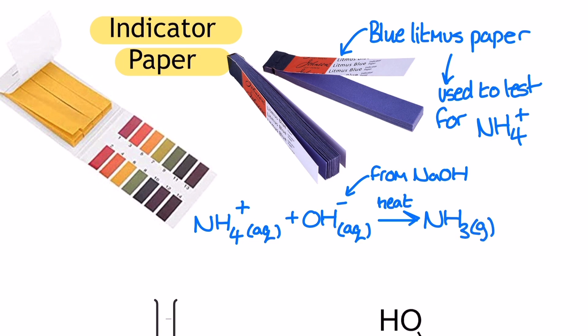We then test the gas produced, if any, with moist blue litmus paper. Now, be careful here, because unlike other ways which we test the pH of something, we're not actually going to place the moist litmus paper in the solution. We're going to hold it over the open end of the test tube, whilst the sample is being heated.